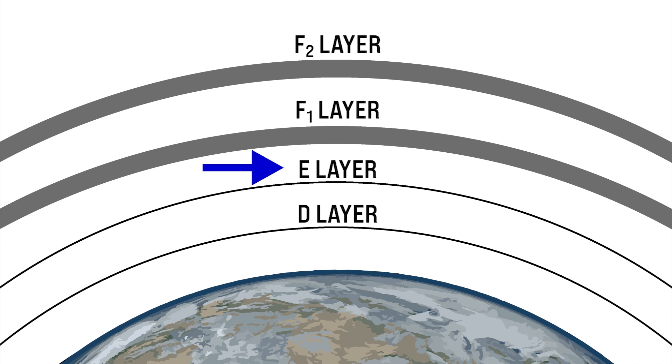The E region extends from about 60 to 70 miles above the earth. Ionization is caused primarily by extreme UV and x-rays so peak ionization is during the daytime and exists somewhat throughout the night.